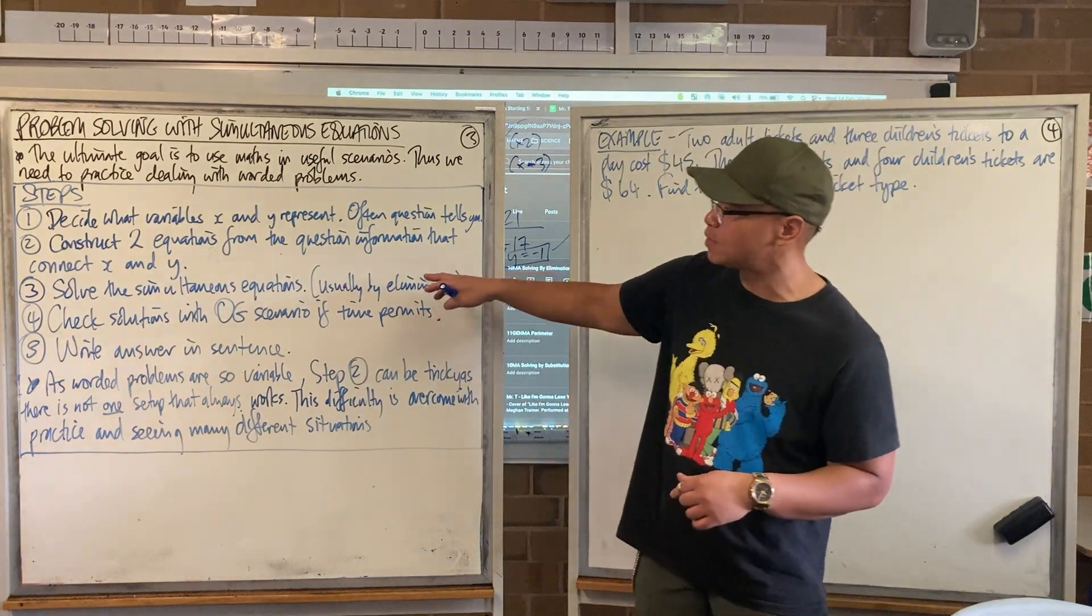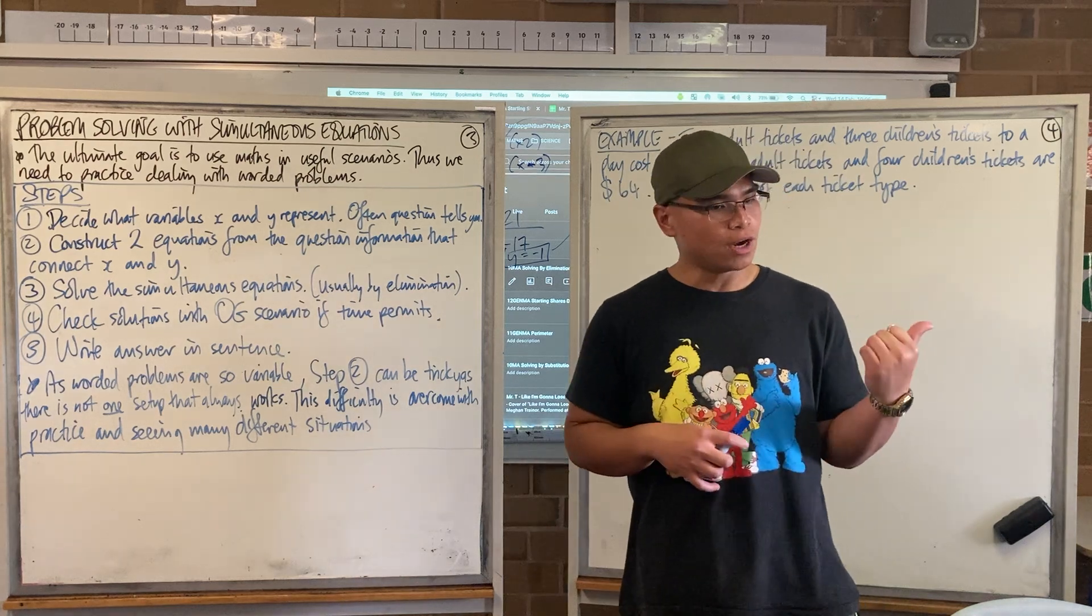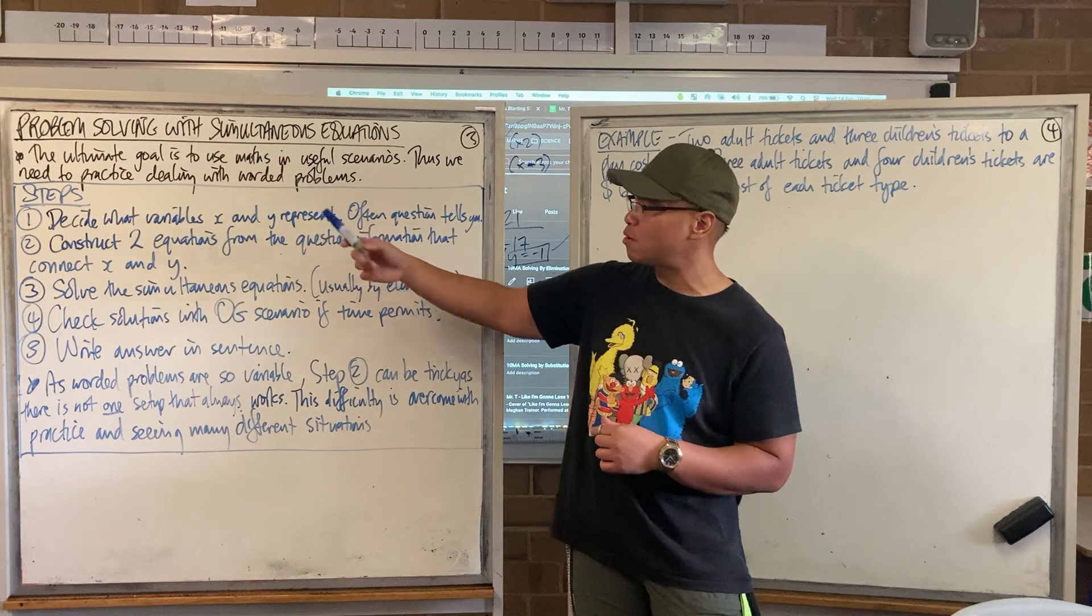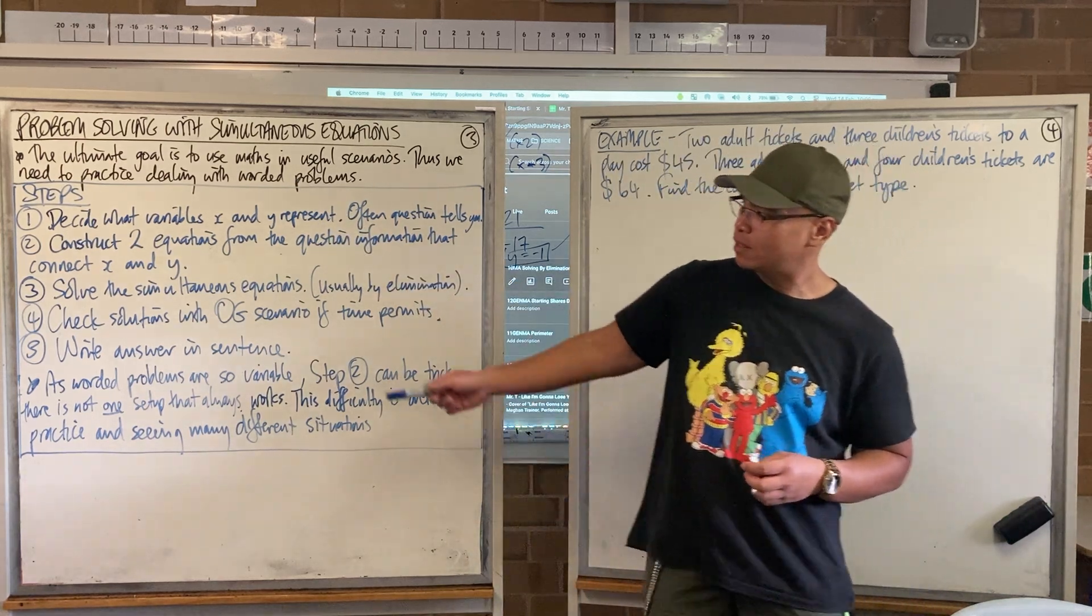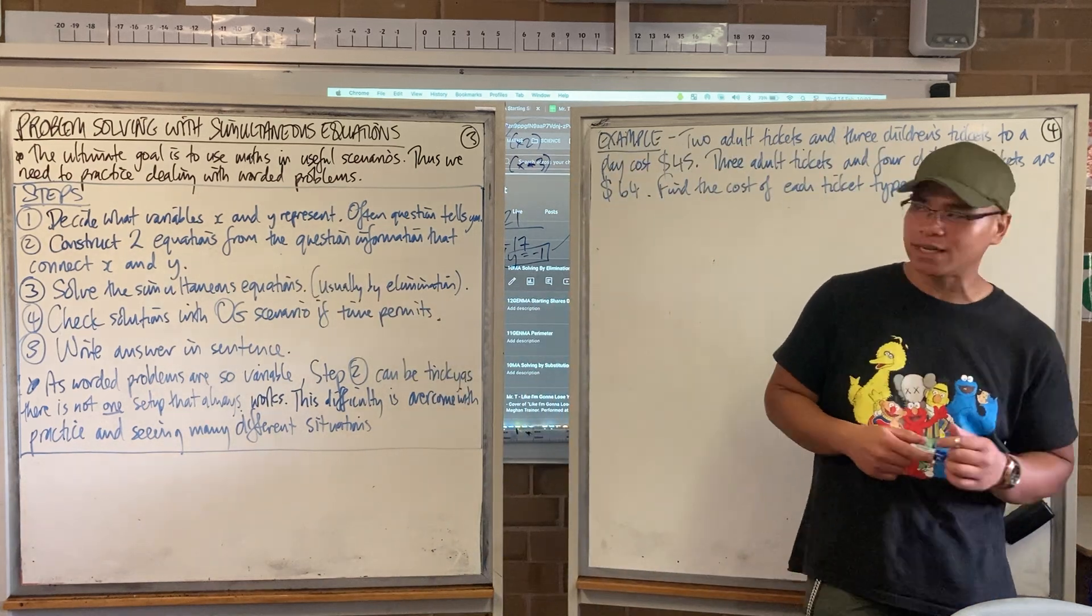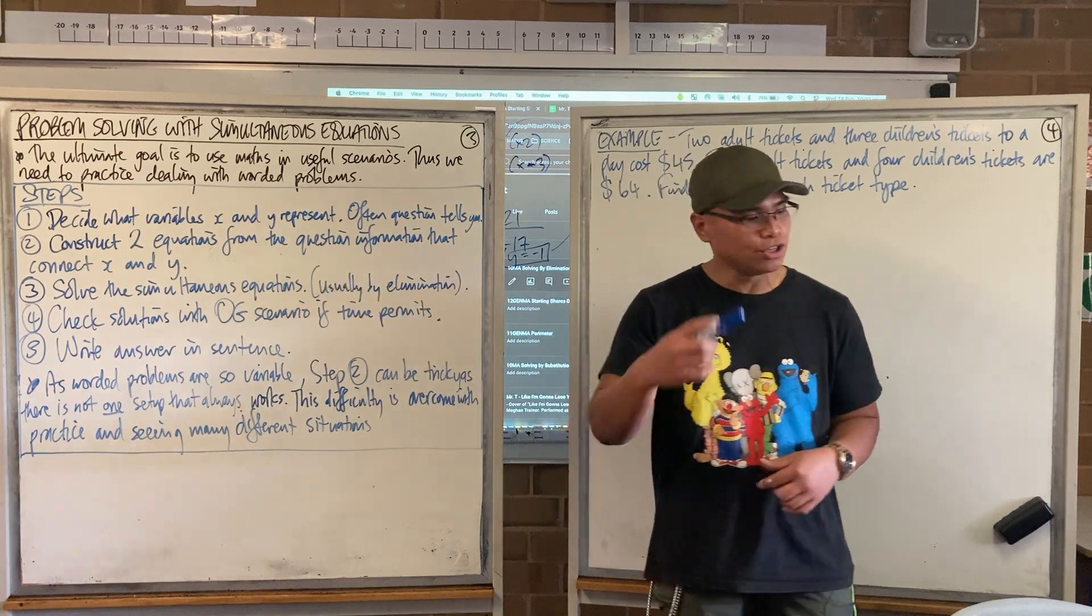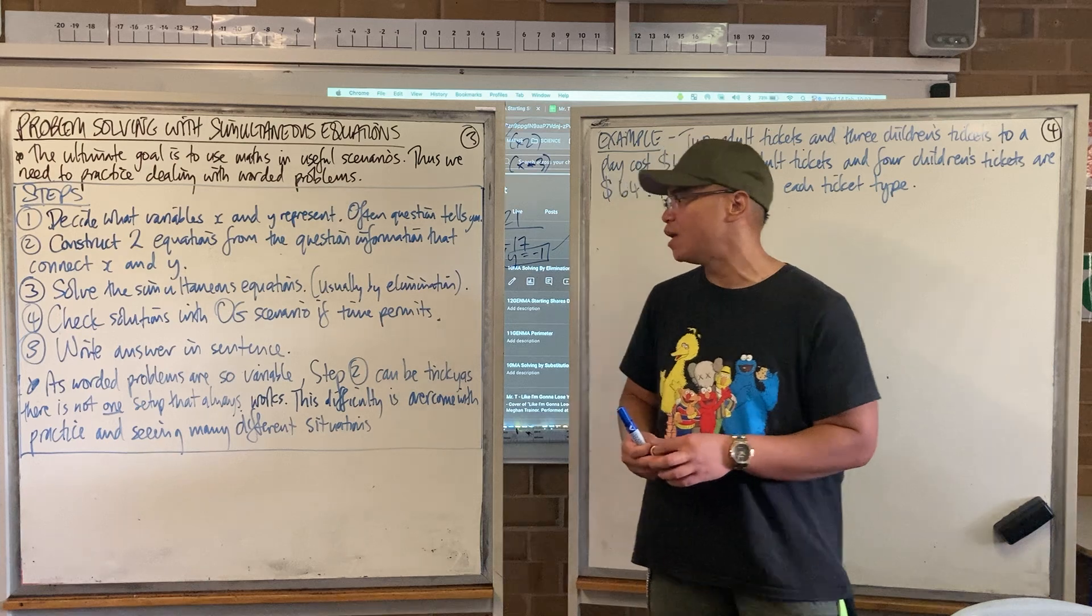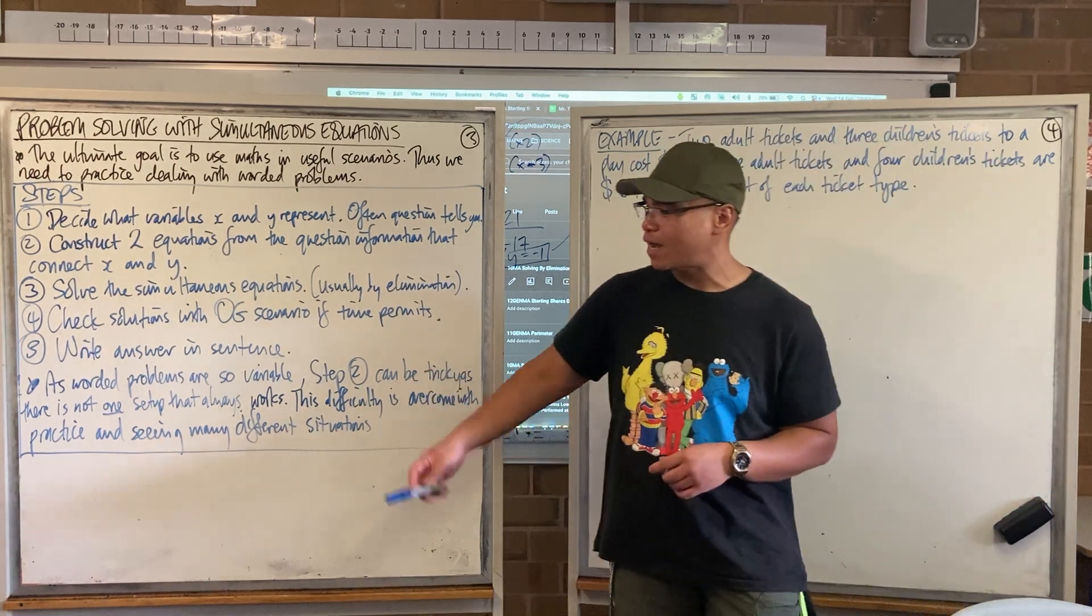So what are the steps? The same steps as when you did worded problems with algebra before, and also worded problems with inequalities. Step one: Decide what variables x and y represent. Often the question tells you. Step two: Construct two equations from the question info connecting x and y. Step three: Solve simultaneous equations. You're usually going to use elimination. Step four: Check the solutions with the original scenario if you have time. Step five: Write the answer in a sentence.